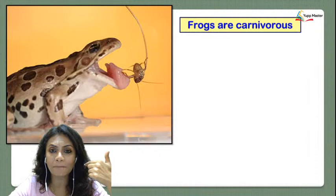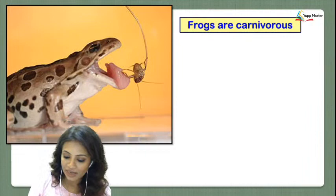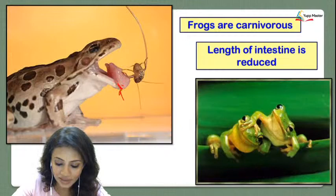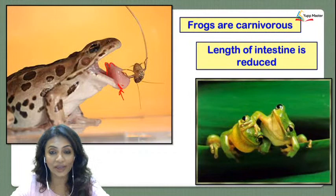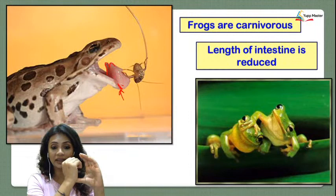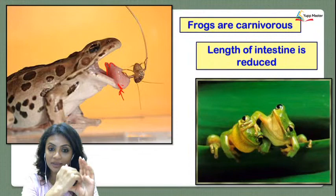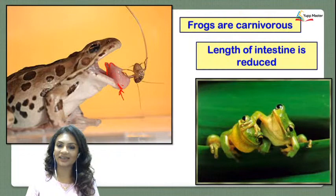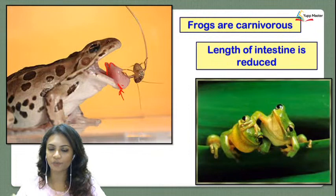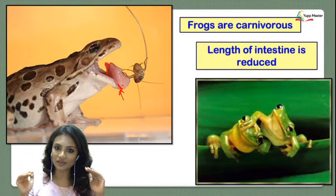The tongue is attached at the front, and the back part is free. When the frog opens its mouth to catch an insect, the tongue flips out from the back end to catch the insect and pull it back in. Our tongue comes out forward; their tongue comes out from the back. Because frogs are carnivorous they don't eat vegetables, so there is less digestive processing and their intestines are quite reduced in length compared to others.